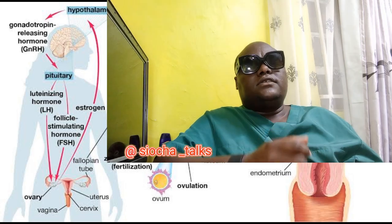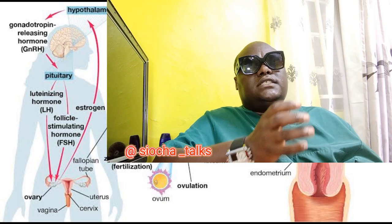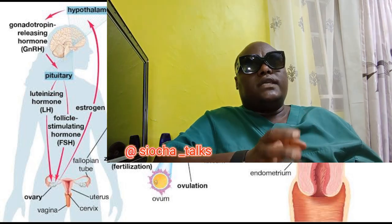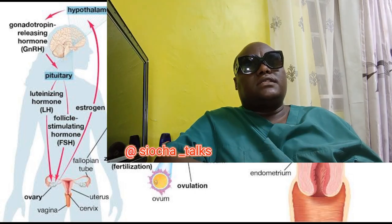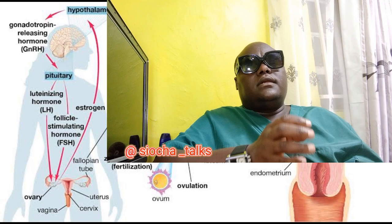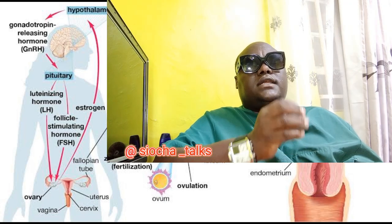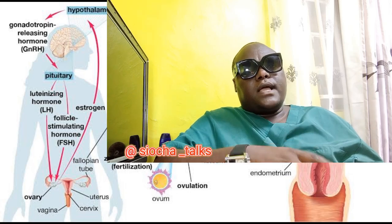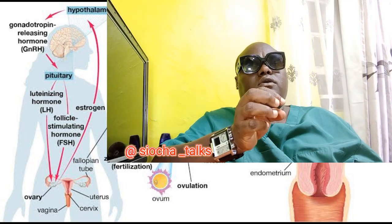As ovulation approaches, cervical mucus may become thinner, more stretchy, and similar in consistency to raw egg whites. This type of mucus helps sperm travel more easily through the cervix and into the fallopian tubes. This mucus discharge can be found outside the vaginal canal — it is stretchy and resembles the white part of an egg.